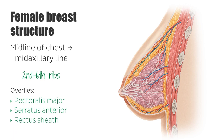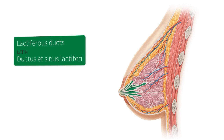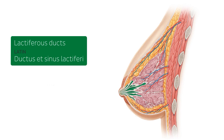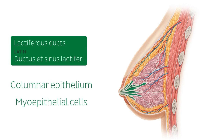Milk is transported to the nipple by the lactiferous ducts, which we can see here highlighted in green. The lactiferous ducts are lined by columnar epithelium and are supported by myoepithelial cells. It's important to note that the female breast usually contains between 5 and 15 ducts, and these ducts are only involved in milk transport.